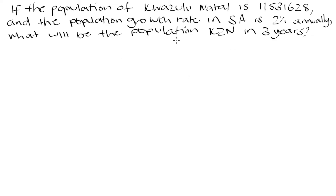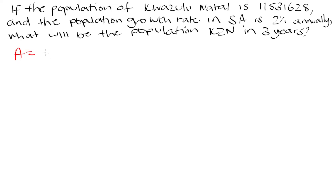This is one of the more straightforward ways you can be asked about population growth. You are given a current population — in this case 11,531,628 — and you're told that the population growth rate is 2% annually in South Africa. You are asked to determine what the population will be in KwaZulu-Natal in three years. We're going to apply the compound interest formula to this.